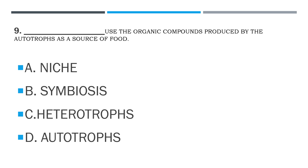Number 9. Blank used the organic compounds produced by the autotrophs as a source of food. A. Niche. B. Symbiosis. C. Heterotrophs. D. Autotrophs.